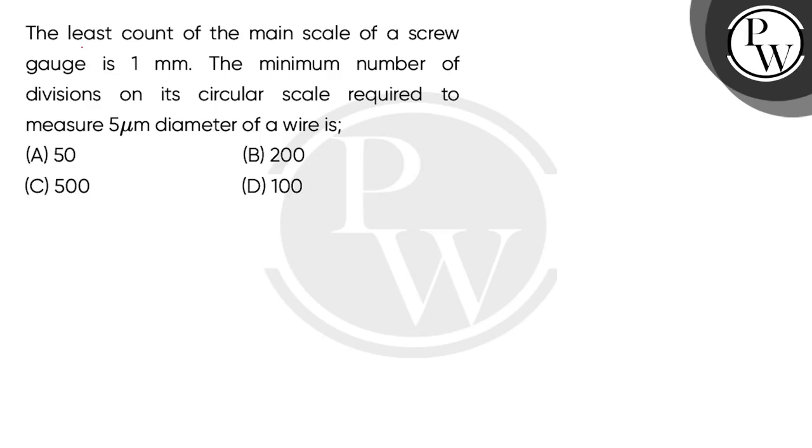Let's read the question. The least count of the main scale of a screw gauge is 1 mm. The minimum number of divisions on its circular scale required to measure 5 micrometer diameter of a wire is: